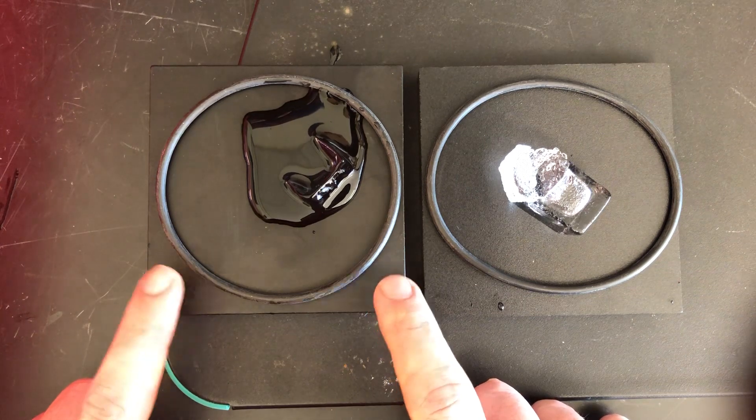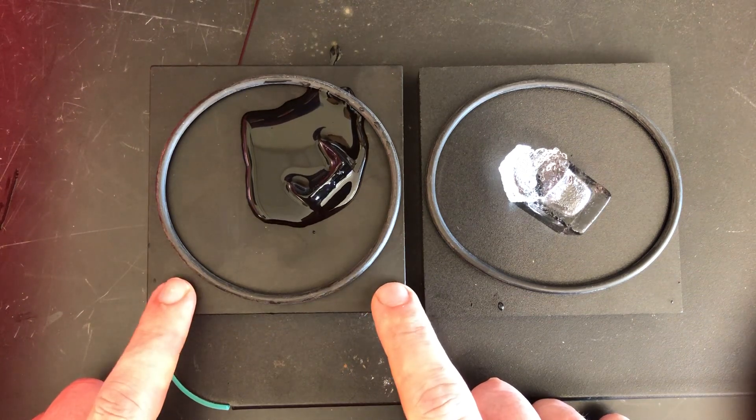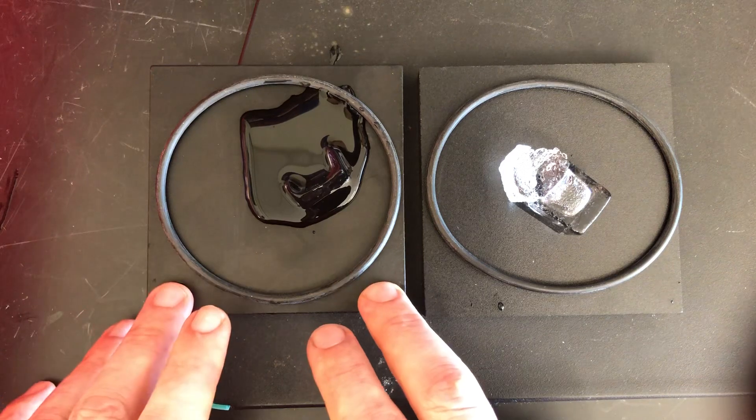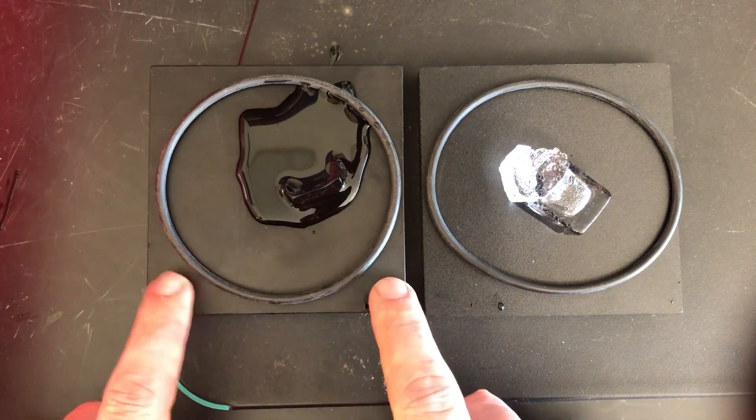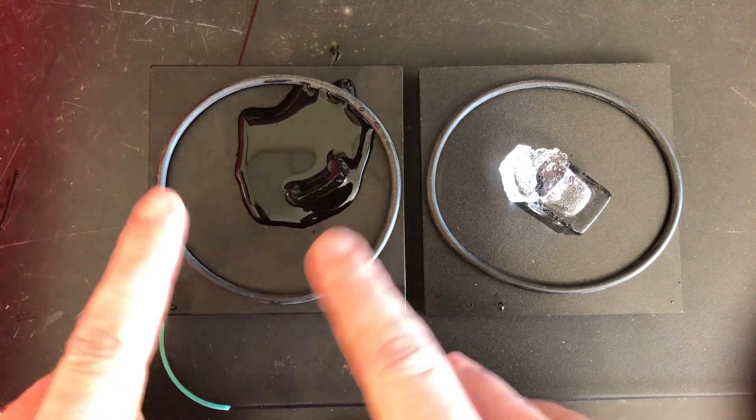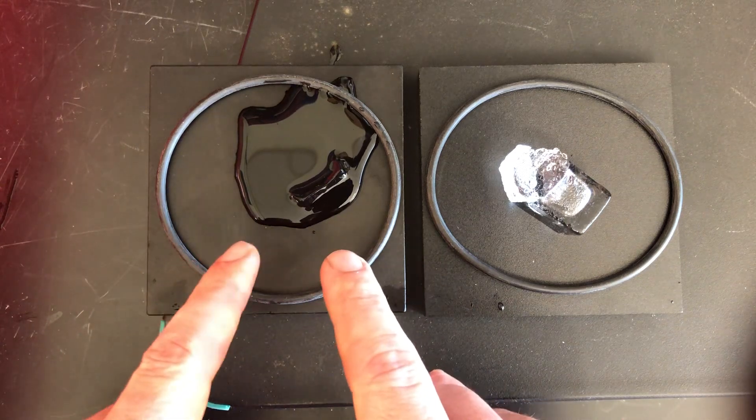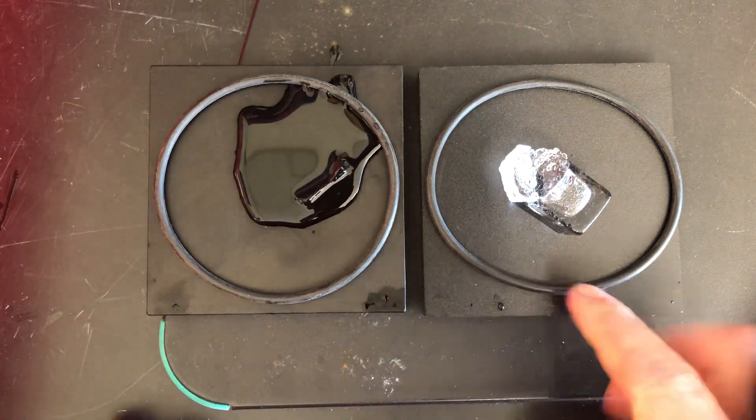Objects that have low specific heats absorb heat energy very quickly. Same thing with conductors. Conductors transfer energy very quickly. Metals are very good conductors. So that heat energy is being transferred from the ice cube into the tile, or vice versa. And you end up having very quick melting. Over here, plastic.